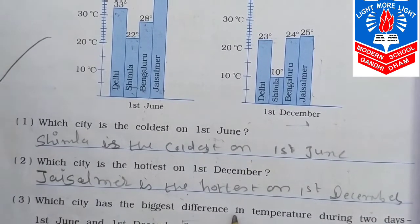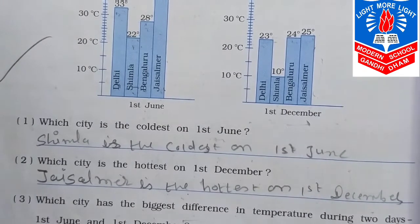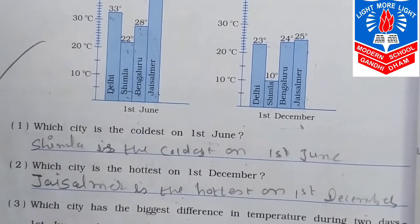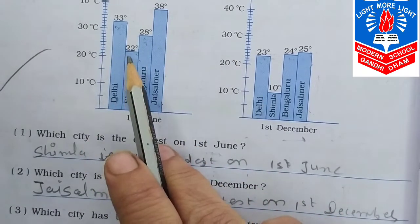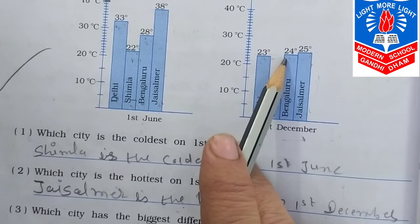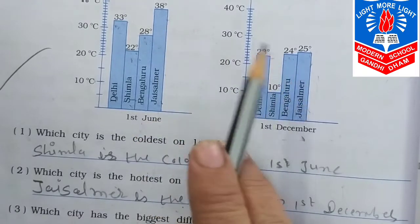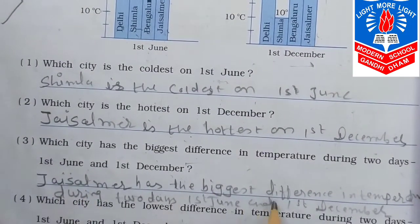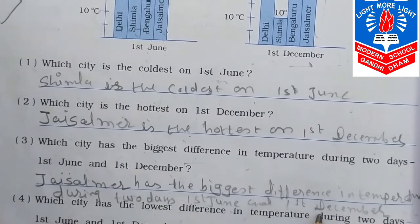Which city has the biggest difference in temperature during the 2 days — 1st June and 1st December? We check: Delhi 33 and 23, that's 10 degrees difference. Shimla 22 and 10, that's 12 degrees. Bangalore 28 and 24, only 4 degrees. Jaisalmer 38 and 25 — that is 13 degrees difference. So Jaisalmer has the biggest difference. We write: Jaisalmer has the biggest difference in temperature during 1st June and 1st December.